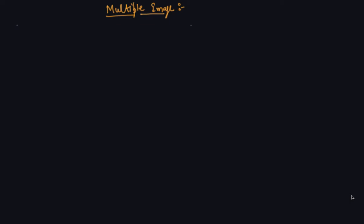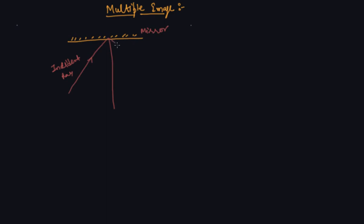A single plane mirror makes a single image. Let me draw it here. This is a plane mirror and a ray of light is coming — this is the incident ray. This is the normal to the mirror, and this is the reflected ray. The angle of incidence I equals the angle of reflection R. This is the law of reflection.